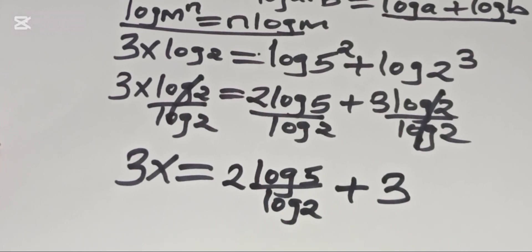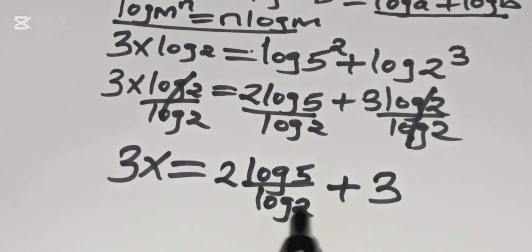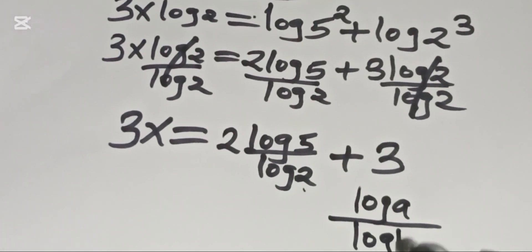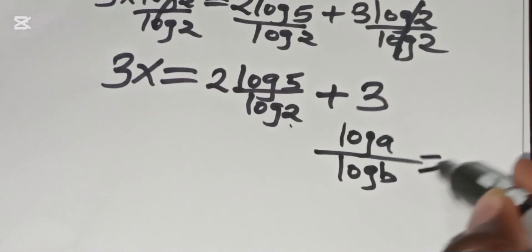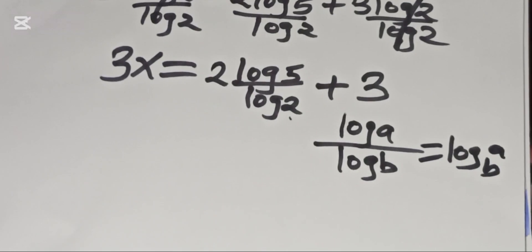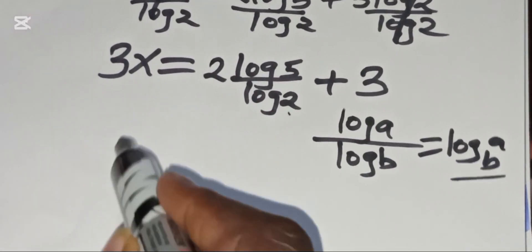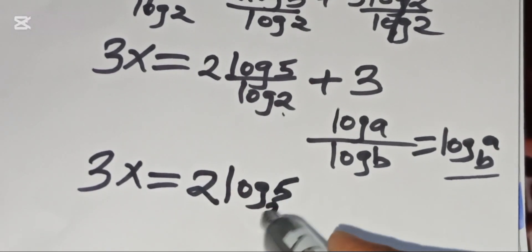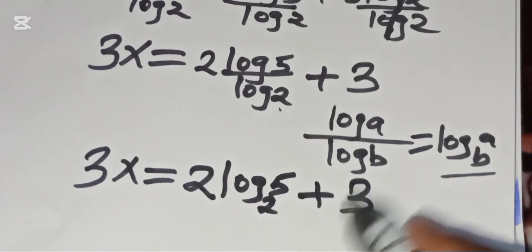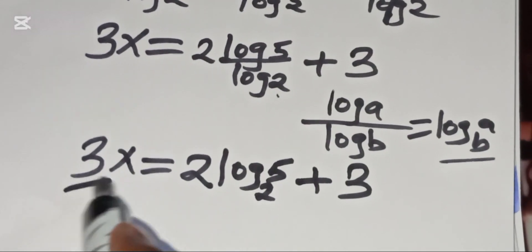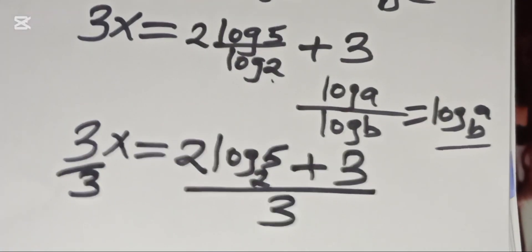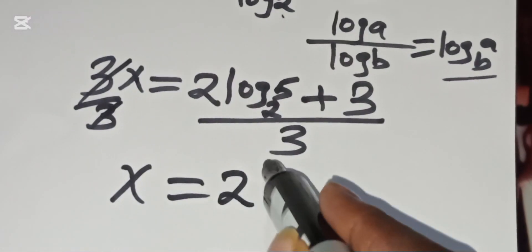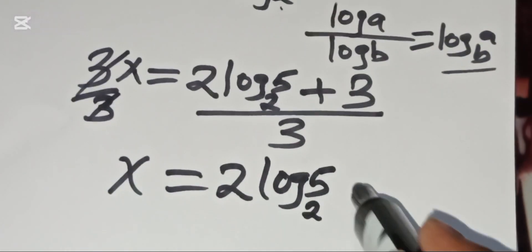Now, log 5 divided by log 2 is in the form log(a)/log(b), which we can express as log of a to base b. Applying this property, we get 3x equals 2·log₂5 plus 3. Dividing both sides by 3, the value of x is equal to (2·log₂5 + 3) divided by 3.